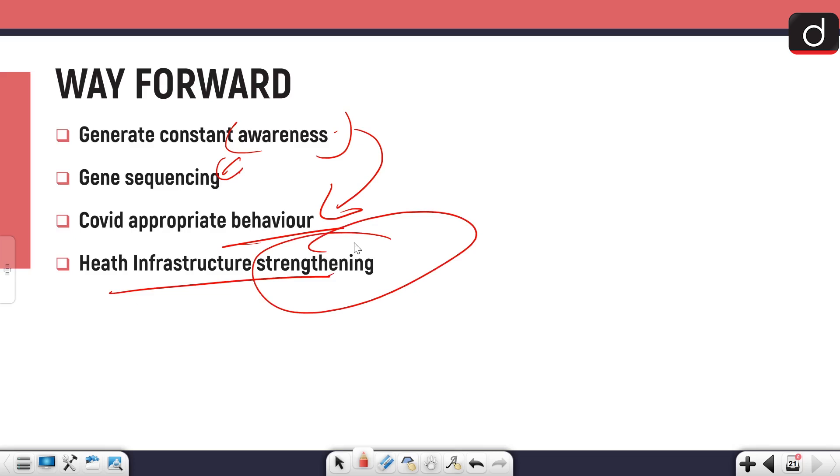Health infrastructure strengthening is a long-term vision, not a short-term vision. We need health infrastructure to be strengthened because this is not going to be our last pandemic. Many such pandemics are in the process and the hotspot is definitely going to be China. That is the entire gist of this new variant that has been found.